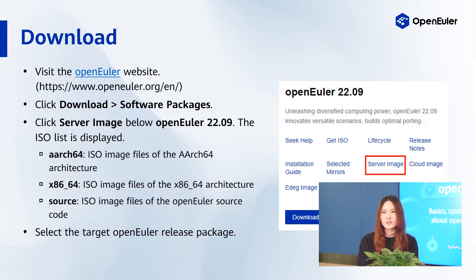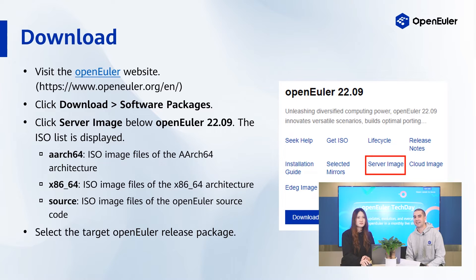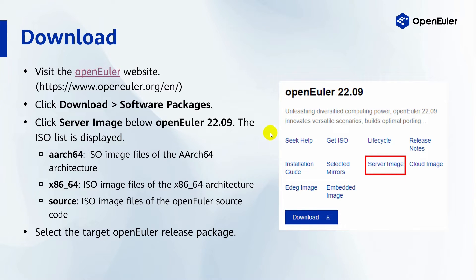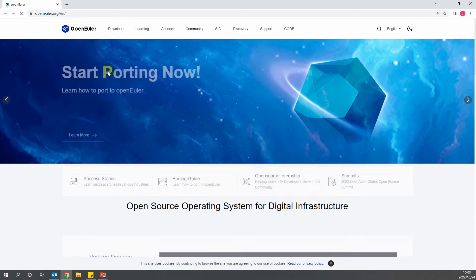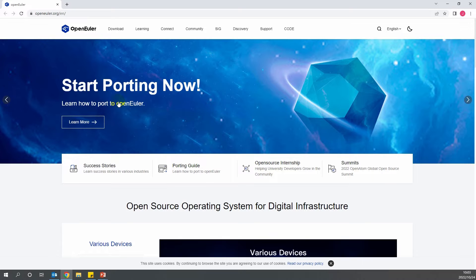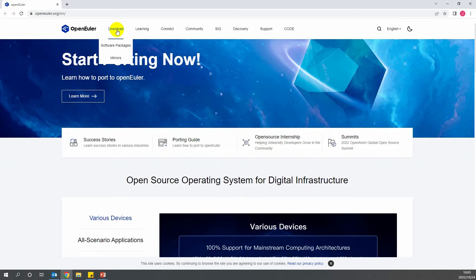What if I want to try Open Euler? When can I download it? To download Open Euler, first visit the Open Euler website. Click on Download, then Software, and then Packages.